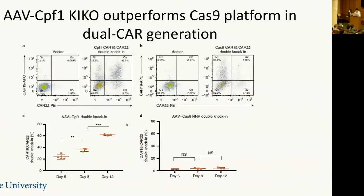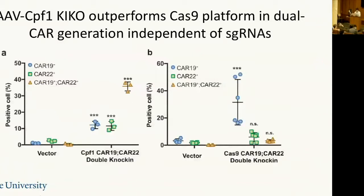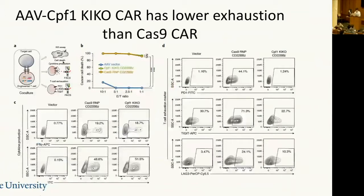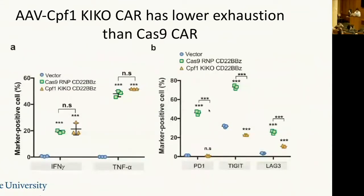We confirmed this effect is independent of the guide RNA used, suggesting it is platform-specific. Characterizing these cells, the KIKO CAR T cells show lower exhaustion compared to Cas9 CAR T cells. Specifically, PD1 is reduced to nearly zero, TIGIT is reduced ~three-fold, and LAG3 ~two-fold — all without compromising interferon-gamma or TNF-alpha production, which are the two key cytokines for T cell function.